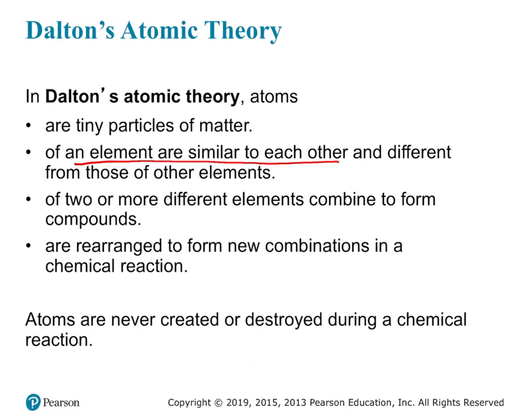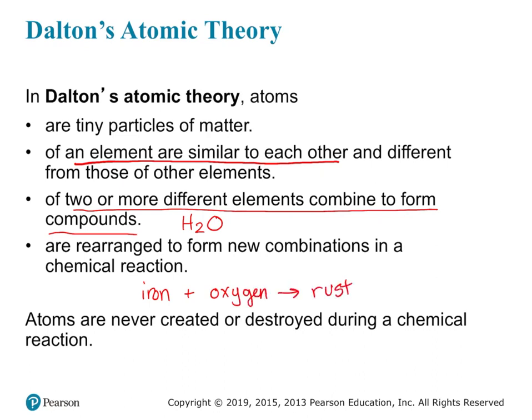Atoms of two or more different elements can combine to form compounds. One example is water, H₂O — atoms of hydrogen combining with an atom of oxygen. Atoms can also rearrange to form new combinations in a chemical reaction. For instance, iron can react with oxygen to form rust. Atoms are never created or destroyed during a chemical reaction. If we have four atoms at the beginning, we'll have those four atoms at the end, possibly in a different combination or new form.